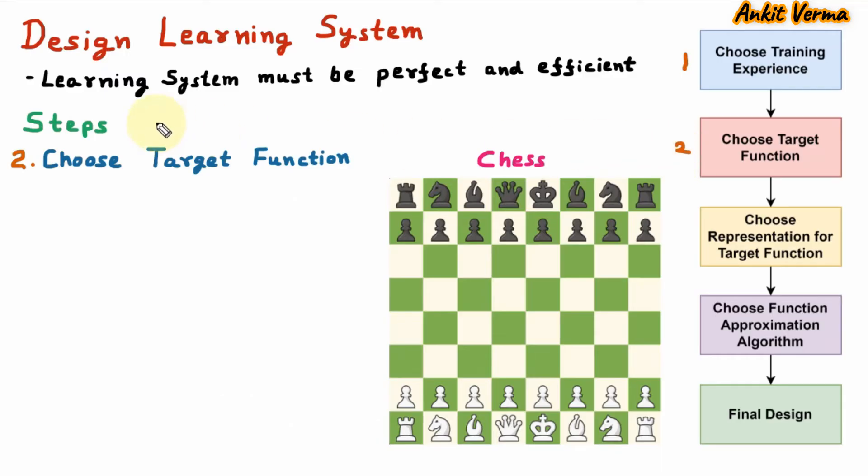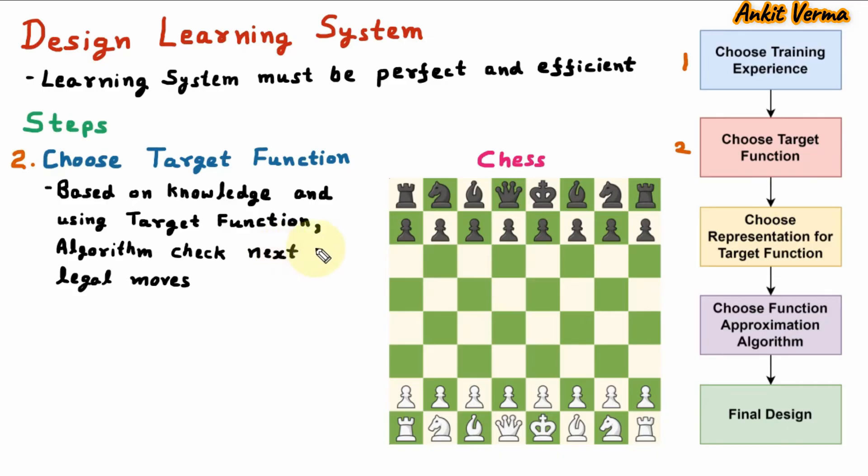Now, the second step to design learning system is choose target function. Based on the knowledge and using the target function, algorithm checks next legal moves. So in chess, let us suppose that the opponent is moving the pawn.